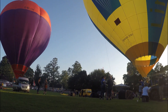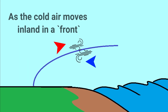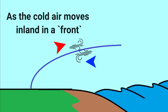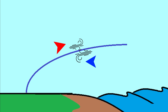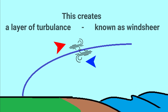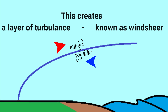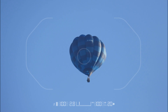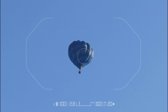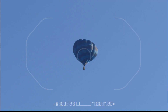As the balloons climb, they encounter the difference between the outgoing air and the incoming air. This creates a boundary layer, known as wind shear, where the change of direction causes turbulence, and we've highlighted this in a series of photographs. Note how the balloon is distorted in shape. The pilot reports that the flight was successful, and he had no issues.